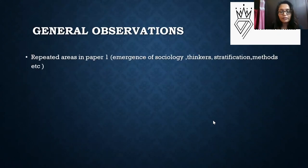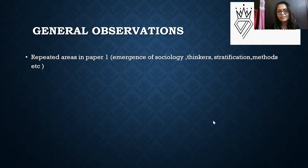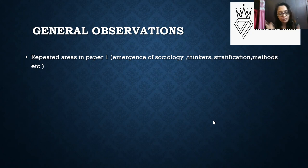We'll start with general observations about the paper, then move on to detailed discussions on Paper 1 and Paper 2. The first observation is that repeated areas in Paper 1 include emergence of sociology, thinkers, stratification, work and economic life, religion, positivist methods, comparison between positivist and non-positivist methods, and quantitative or qualitative methods. Overall, it was a very standard paper covering all standard portions of the syllabus. Anyone who has gone through standard sources and practiced previous year questions has definitely done well.